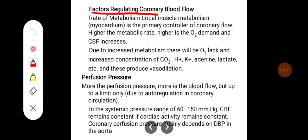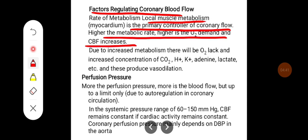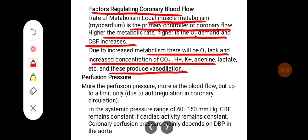The factors regulating coronary blood flow: local muscle metabolism is the primary control. The higher the metabolic rate, the higher the oxygen demand, and coronary blood flow increases. Due to increased metabolism there will be oxygen lack and increased concentrations of carbon dioxide, H+ ions, potassium, adenosine, and lactate, and these produce profound vasodilation.